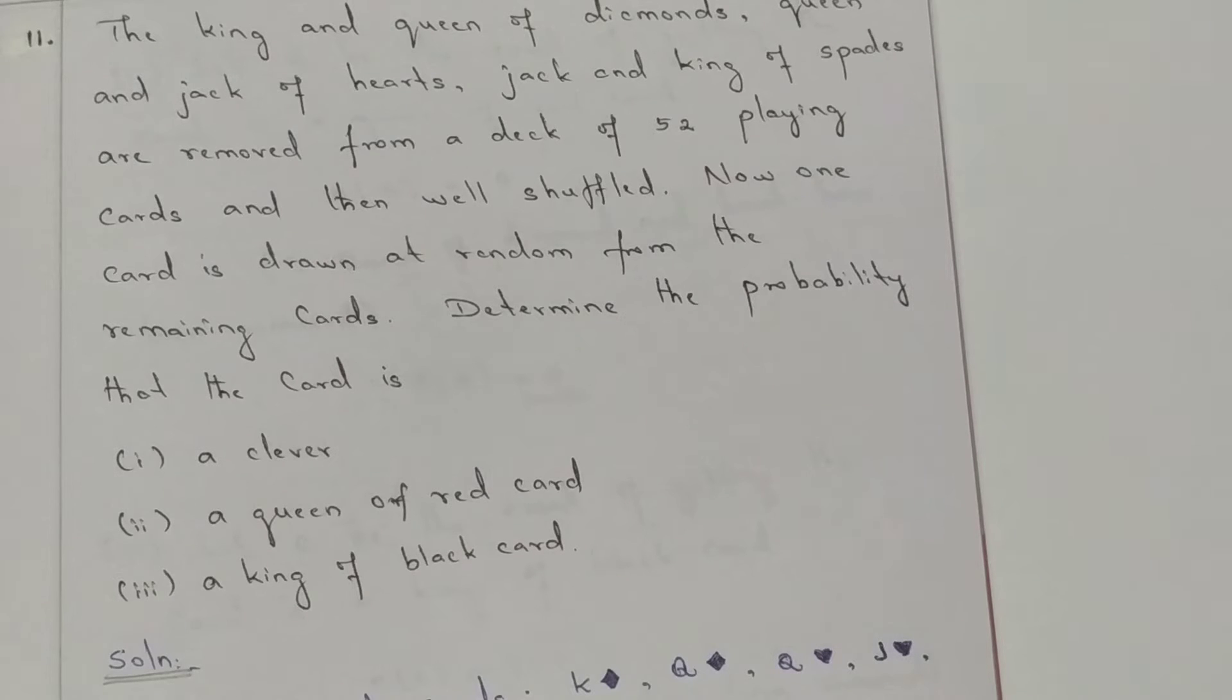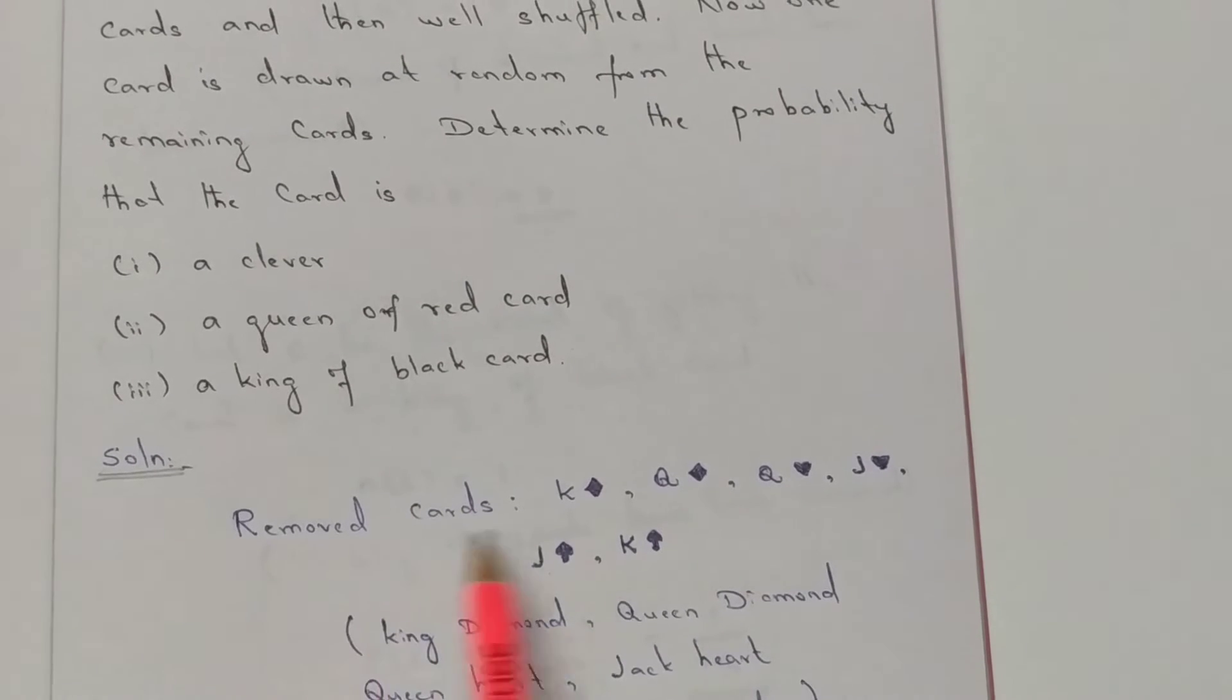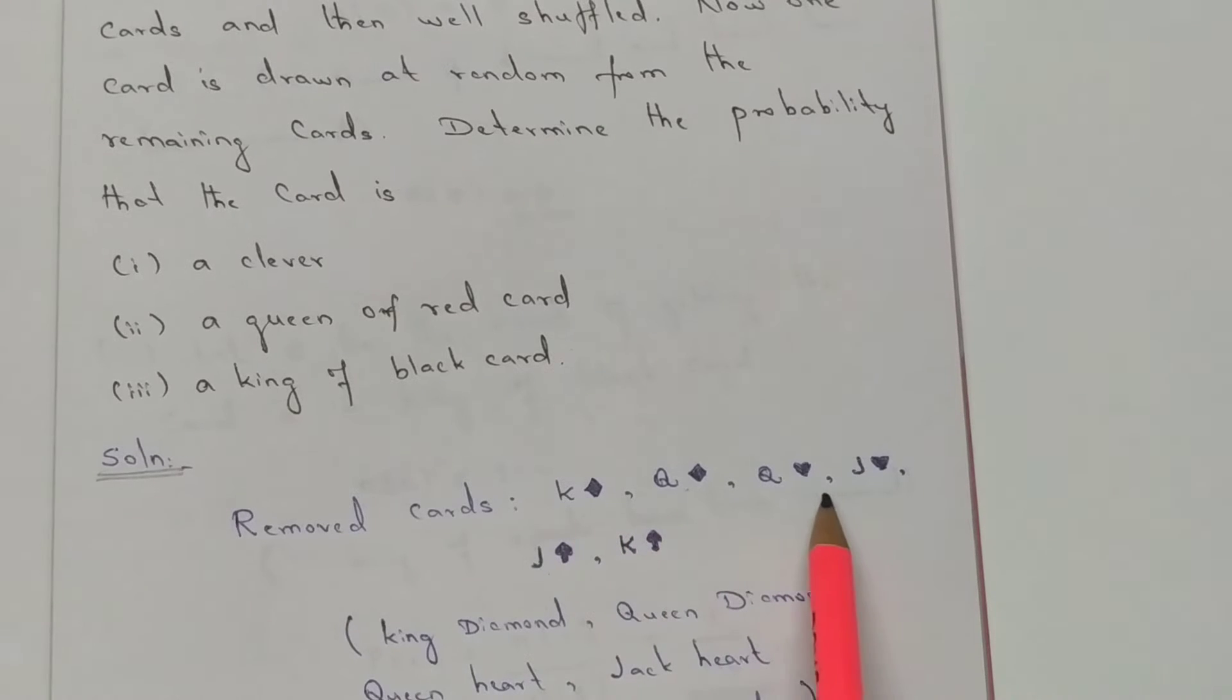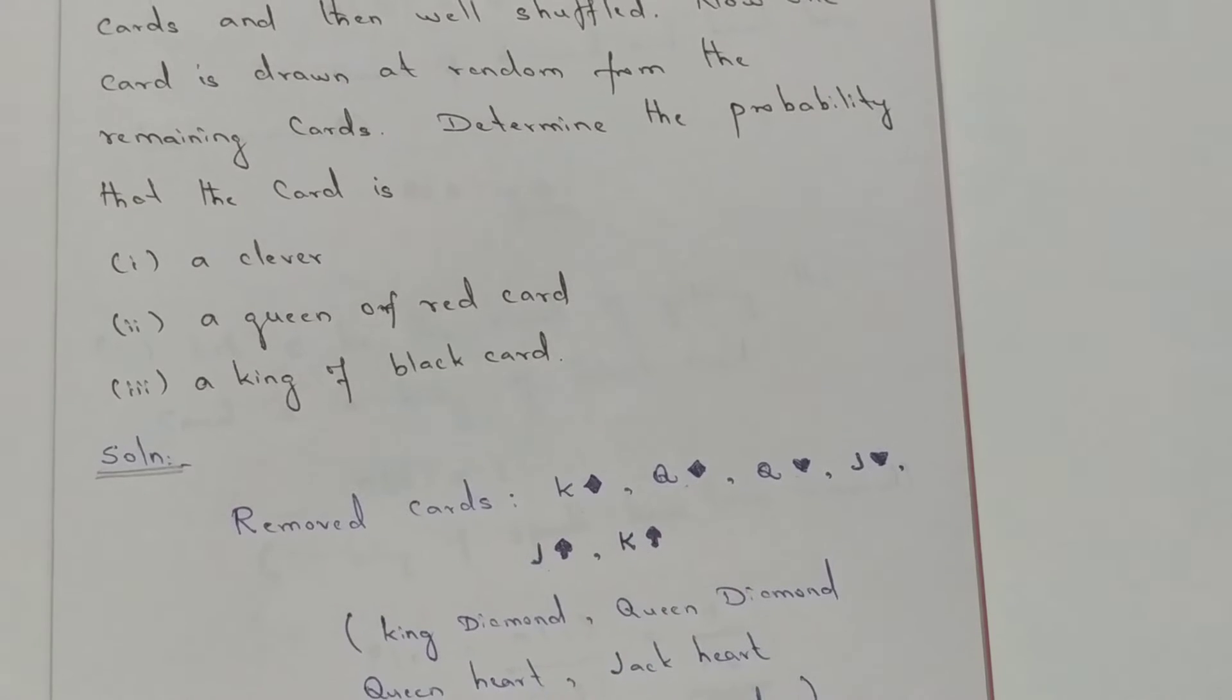First, I will remove the cards. King Diamond, Queen Diamond; Queen Heart, Jack Heart; Spade Jack, Spade King. So 1, 2, 3, 4, 5, 6. Six cards removed.